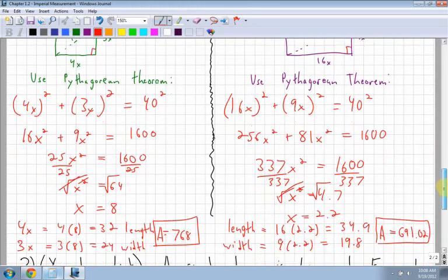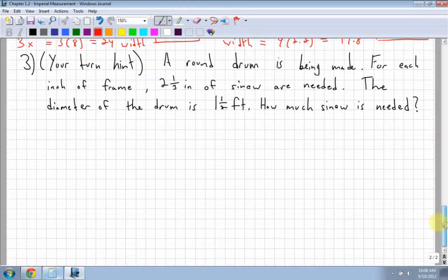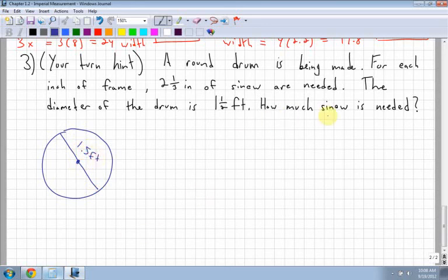Last question I'm going to go through is another your turn question. It's the round drum. The round drum is being made, and it says for each inch of frame, two and a third inches of sinew are needed. So if I had a drum, and it says the diameter of that drum is one and a half feet, so the diameter goes right through the center, and it's going to be 1.5 feet. How much sinew is needed? Always convert these things to decimals. It's a lot easier. Remember that half is 0.5, so 1.5 feet. First thing I would like to do, I need to say, well the sinew is going to be going around all the way around the outside, so I need the circumference.